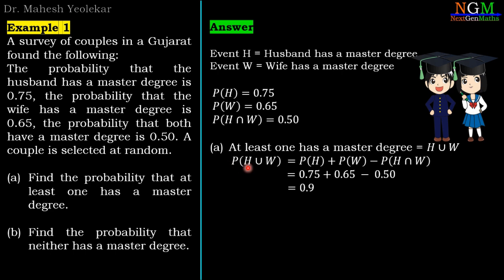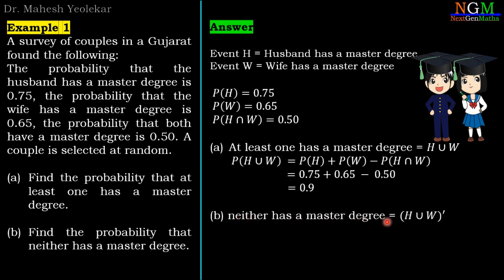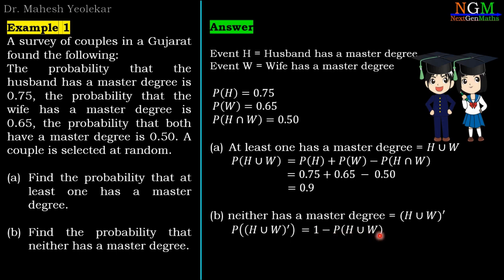So P(H∪W) = 0.9. For the second part, neither has a master's degree means the complement of H∪W. So P((H∪W)') = 1 − P(H∪W) = 1 − 0.9 = 0.1.